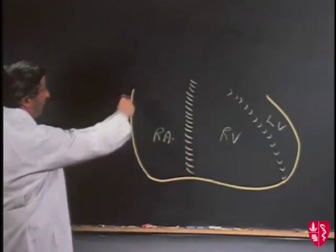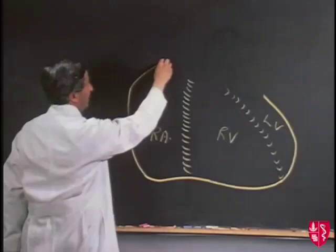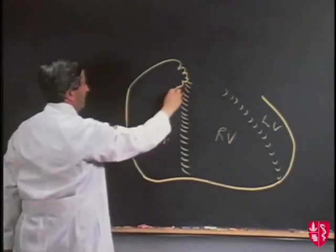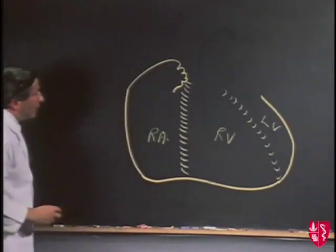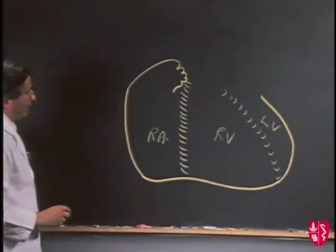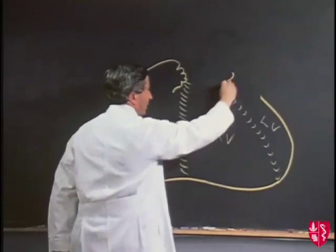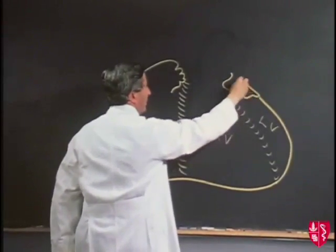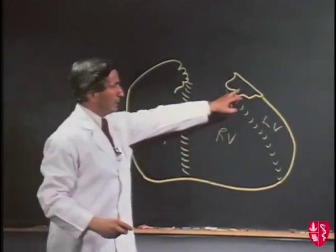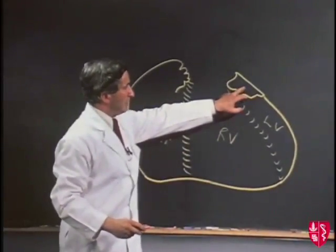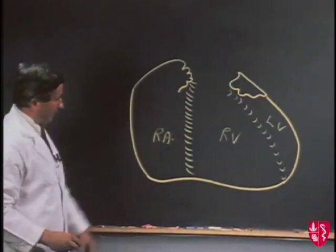At the upper end of the right atrium, we see there's a small outpouching here, which I'll indicate in this manner — which is the right auricular appendix. In the same way, coming round from the back of the heart, we have from the left atrium the left auricular appendix. So this is the left auricular appendix, and this is the right auricular appendix.